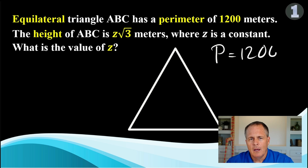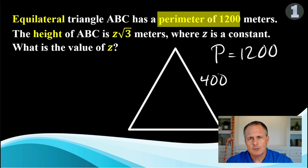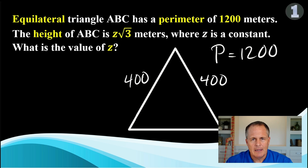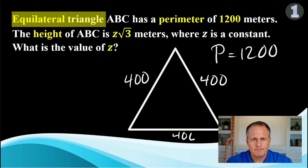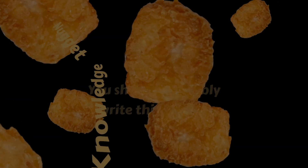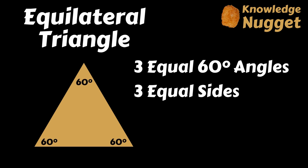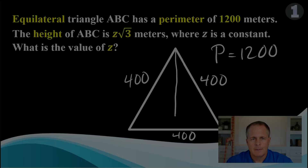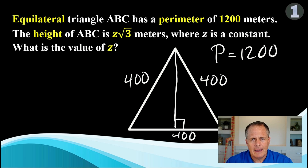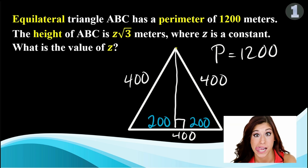Label the picture. What does it mean to have a perimeter of 1,200 in an equilateral triangle? Each side will be 400. This is because in an equilateral triangle, you have three equal angles — all 60 degrees — and three equal sides. Now add the height to the drawing. This segment is 200.